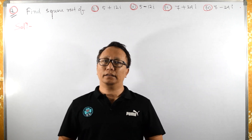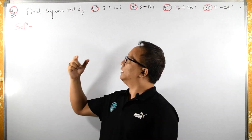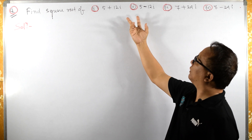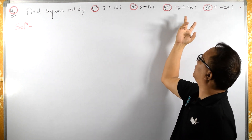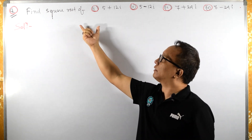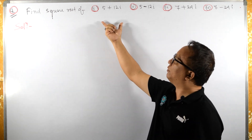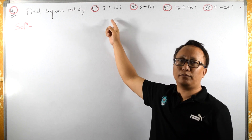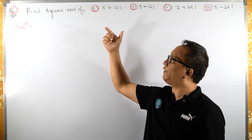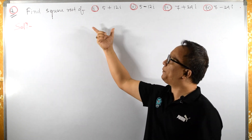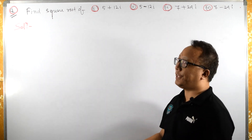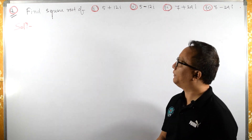Welcome back to my channel. Let us find the square root of the following complex number. We can find this square root by De Moivre's theorem, but I will find this square root of this complex number by an easy way.